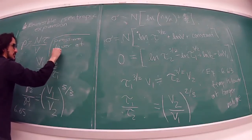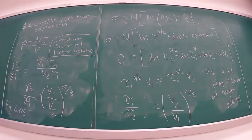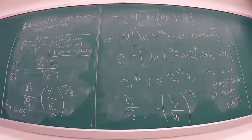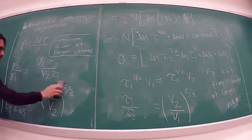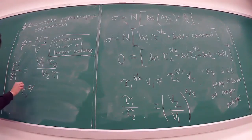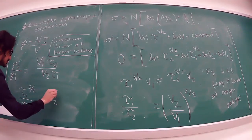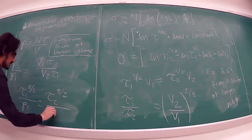We can also get the relationship: τ₁^(5/2)/P₁ = τ₂^(5/2)/P₂. Since PV = Nτ, this links the temperature and pressure in the isentropic process.